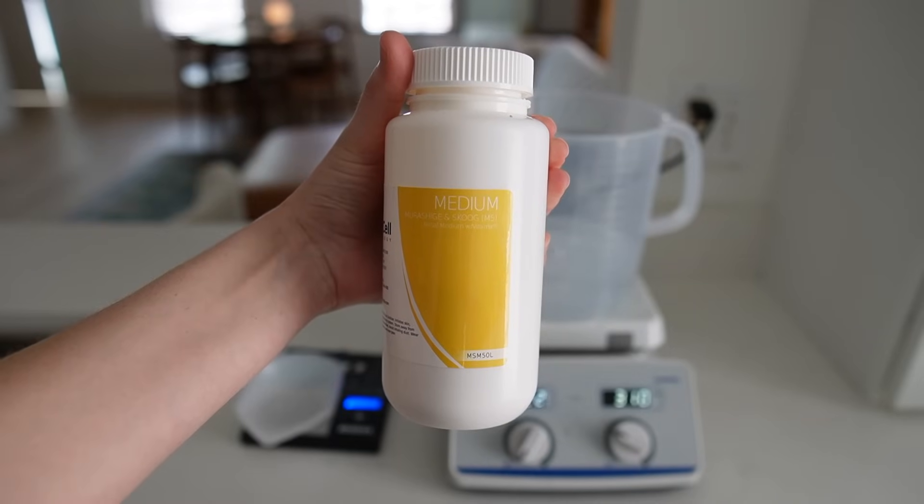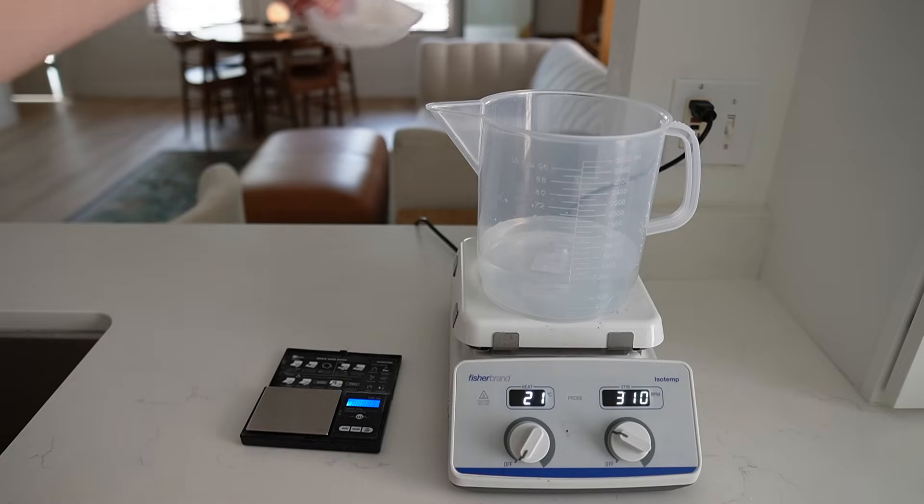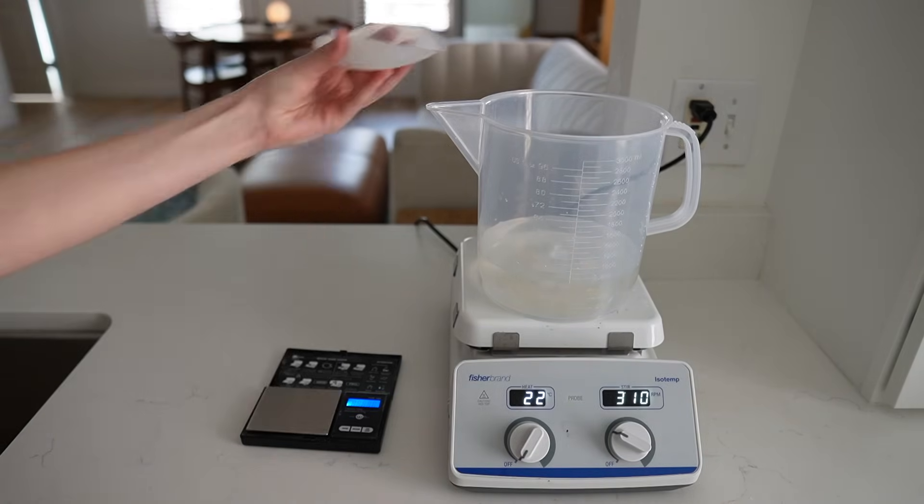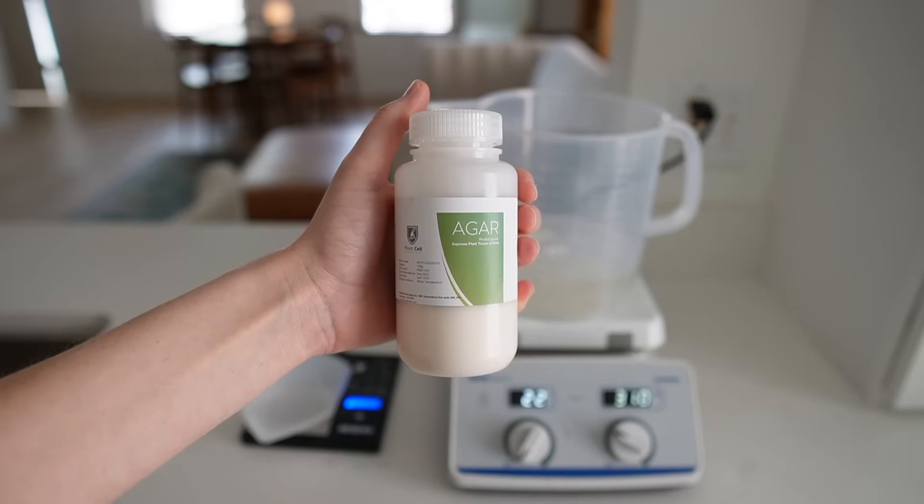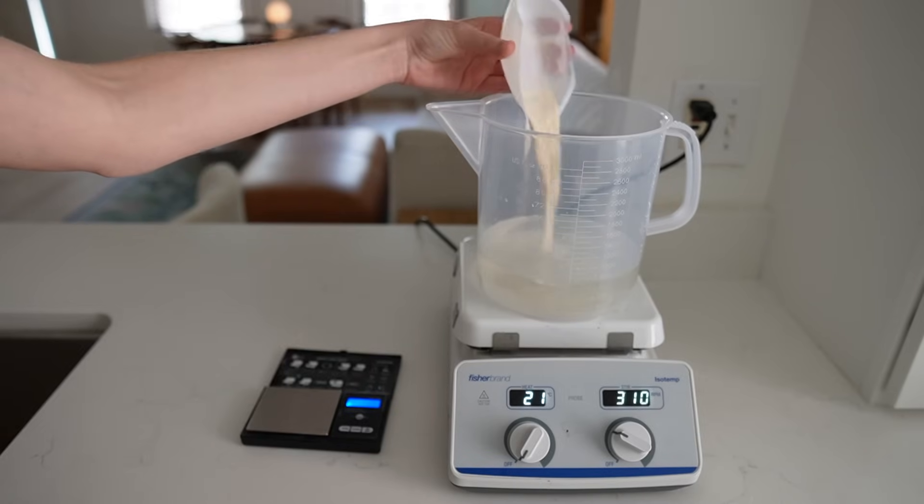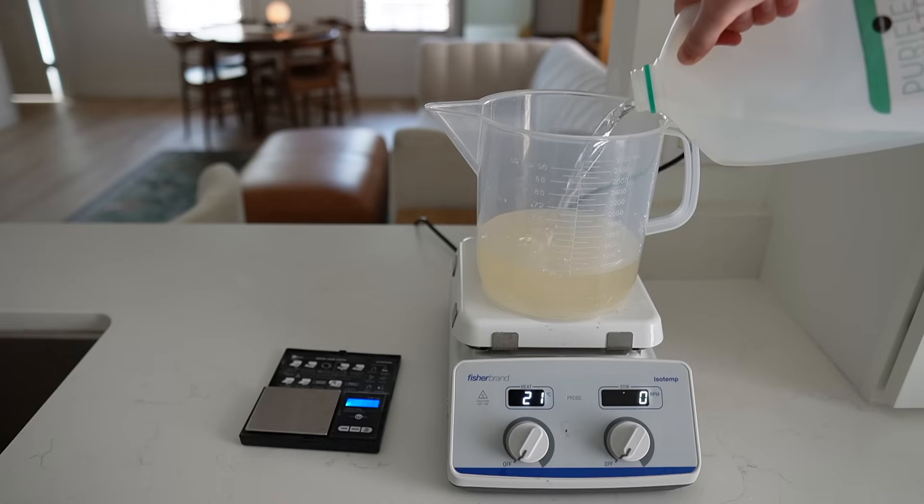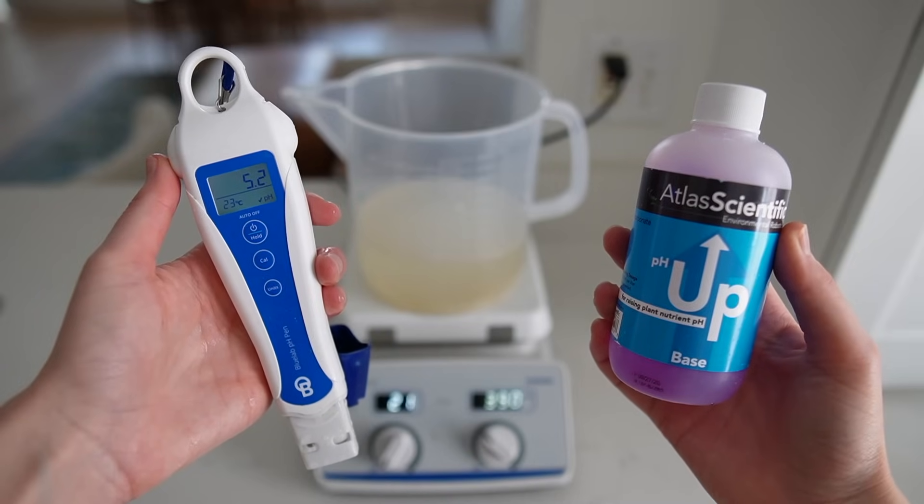To my water, I add 4.54 grams of Murashige and Skoog basal medium. I add 30 grams of sugar, and I also add 7 grams of agar. Once all of the ingredients are added, I top up the container to the one liter mark.